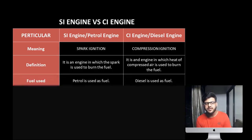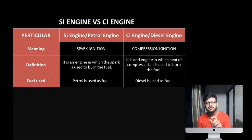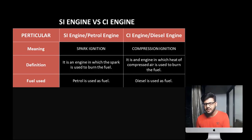The third difference is fuel used. Simply, in SI engine we are using petrol as a fuel. And in CI engine we are using diesel as a fuel. Air is mixing with both of them, but air is not the fuel — fuel means what is combustible. So we are using petrol in SI engine and diesel in CI engine.